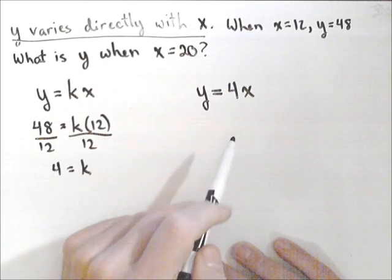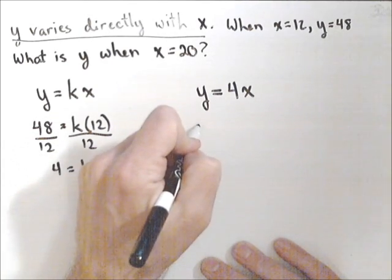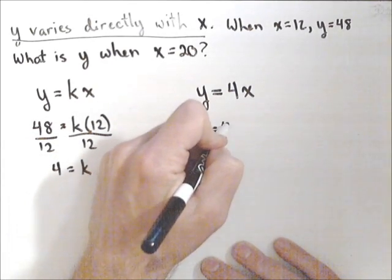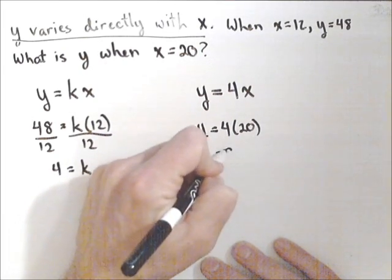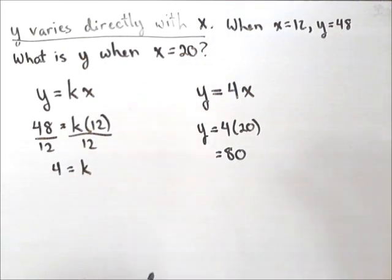In this case, find it when x is 20. y equals four times 20, or 80. So that's how we can handle a direct variation problem.